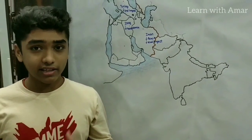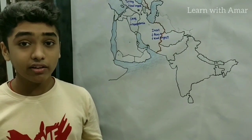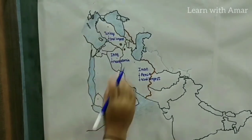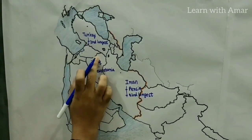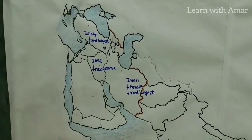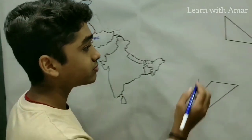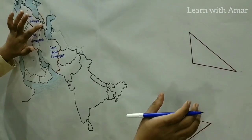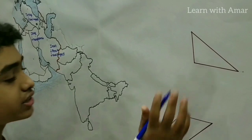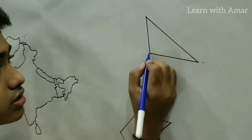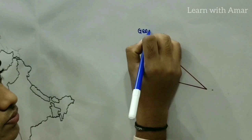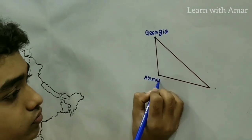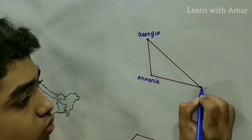Now regarding the second part, let us use some geometry — a few shapes to learn the second and third parts. We use a triangle to learn the upper part and a quadrilateral for the other part. In the triangle, this one is Georgia, this one is Armenia, and this one is Azerbaijan.